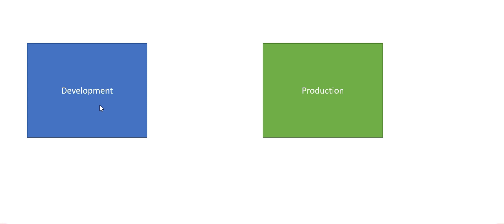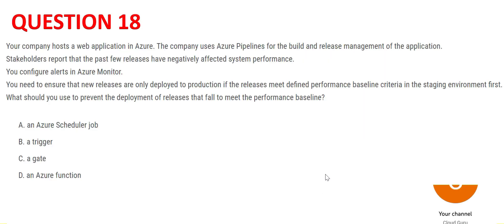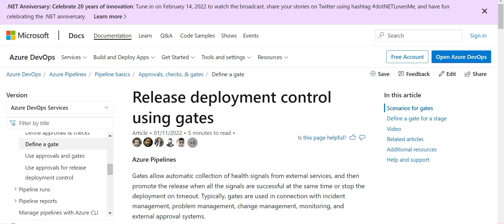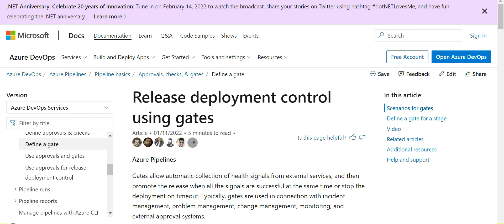Let's look at question 18. You have a dev environment and want to move code to production using DevOps. You should only move the code if performance standards are met — if the code is not performing well, it should not go to production. This can be achieved using a gate. There is a service available for this.